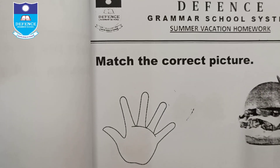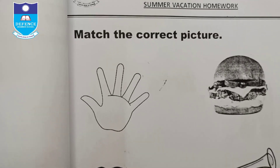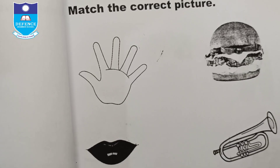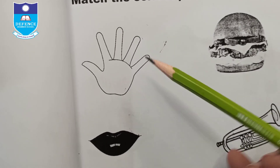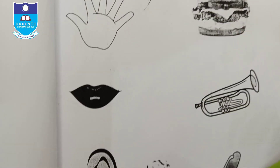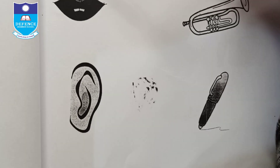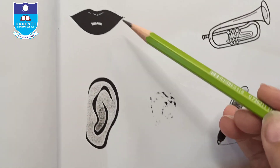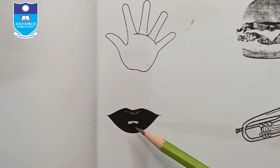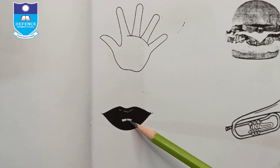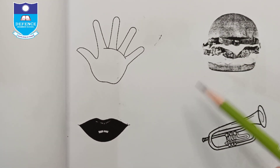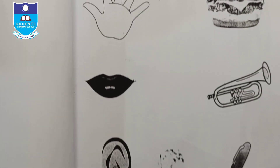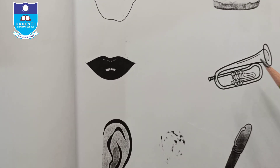Match the correct picture. For example, 'hand' is related to 'pen' by writing. Similarly, 'mouth' is related to eating. Match the ear with the correct picture as well.